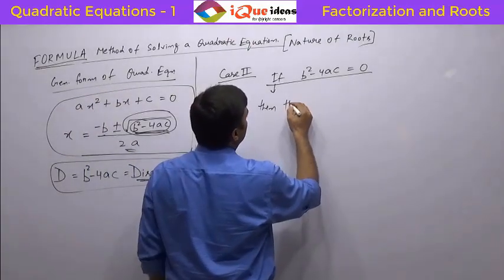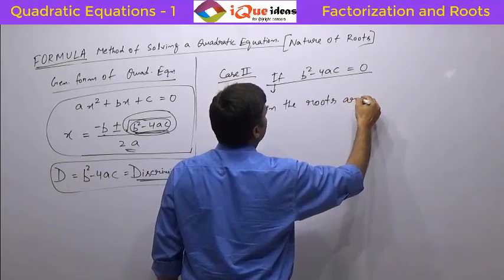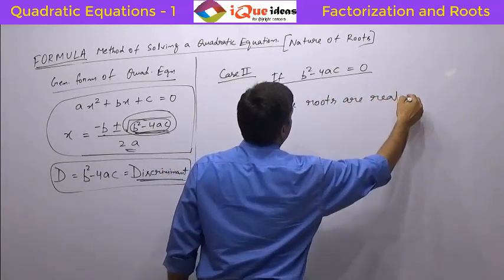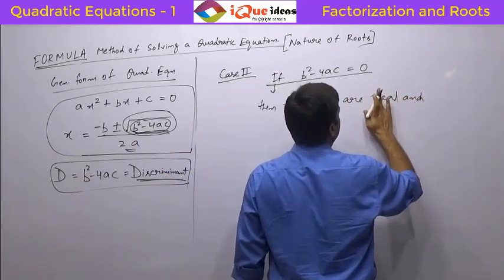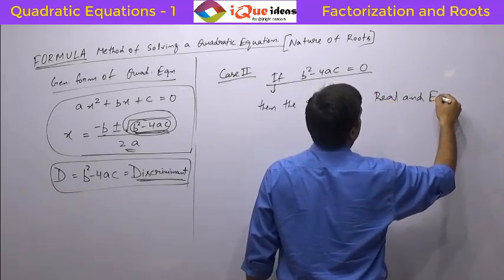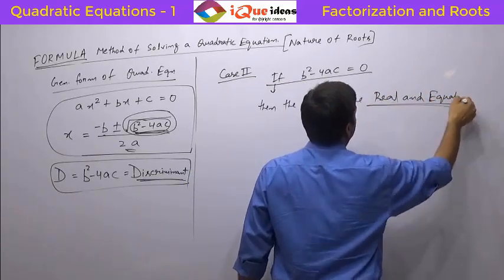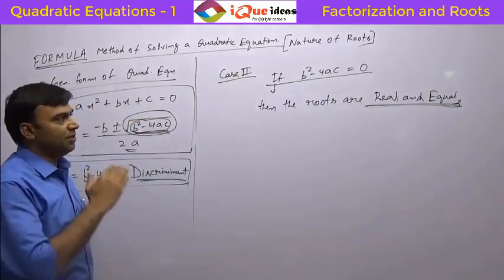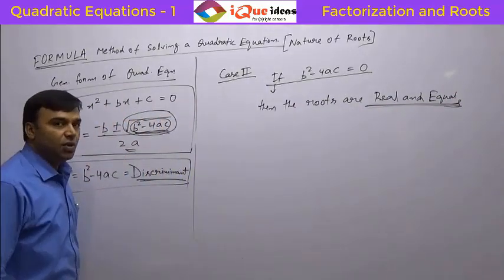So then the roots are real and equal. This is a very important condition — real and equal. So if a quadratic equation has equal roots, that means b squared minus 4ac is equal to 0.